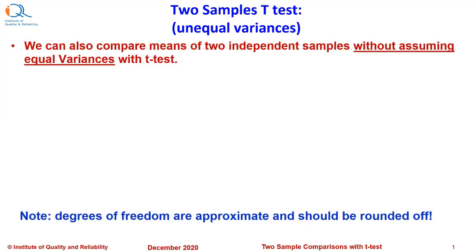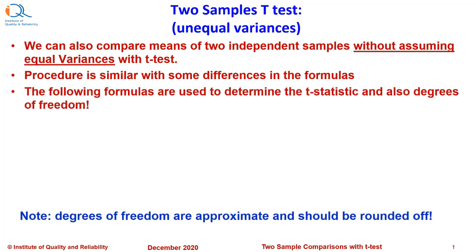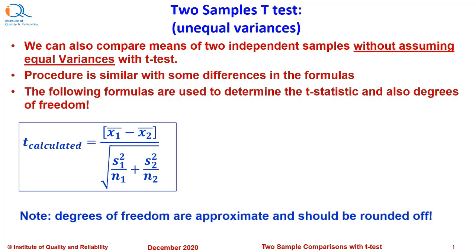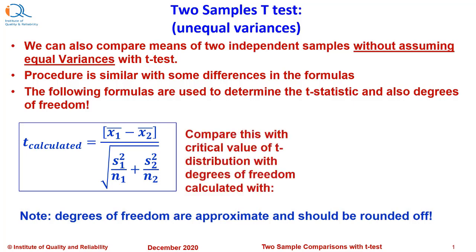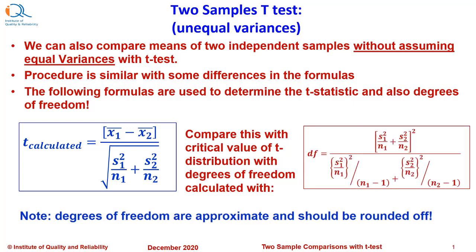We can also compare means of two independent samples without assuming equal variances with t-test. Procedure is similar with some differences in the formulas. The following formulas are used to determine the t-statistic and also the degrees of freedom. This is the formula for calculating the t-statistic and we have to compare this with the critical value of t-distribution with degrees of freedom calculated with this formula. This is little complicated and we can use the excel procedure directly here instead of using these calculations. The degrees of freedom are approximate and should be rounded off to the next integer.